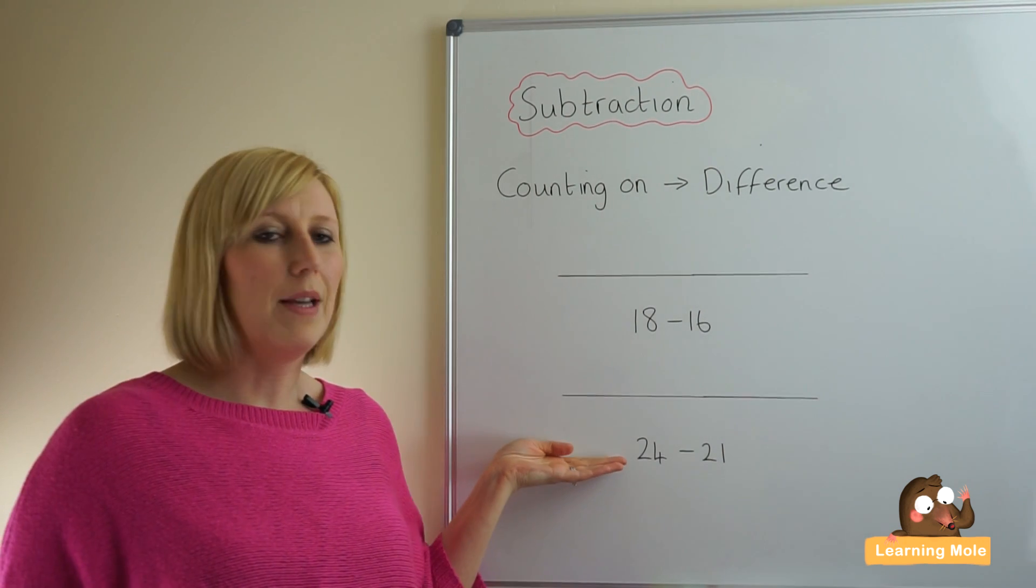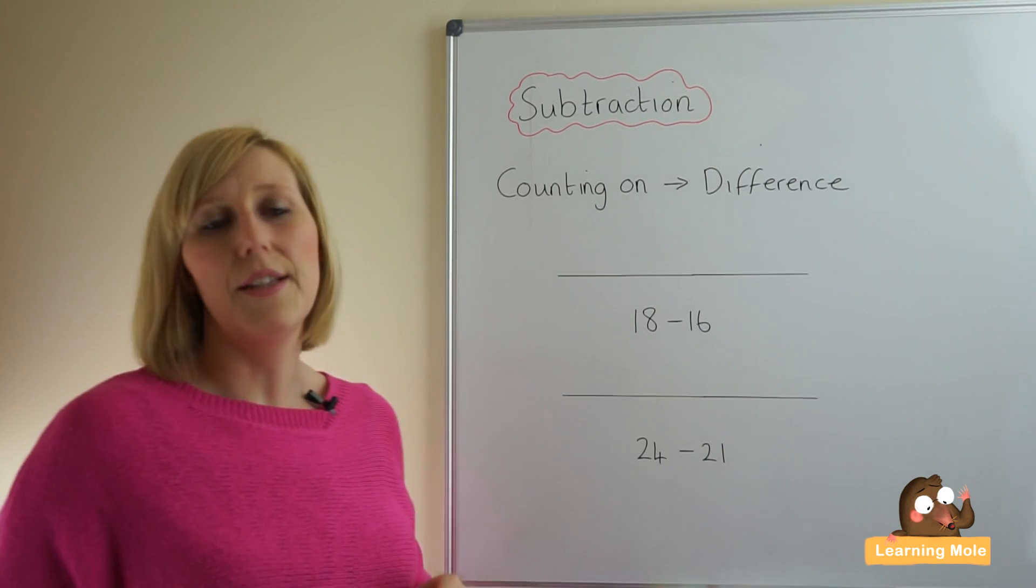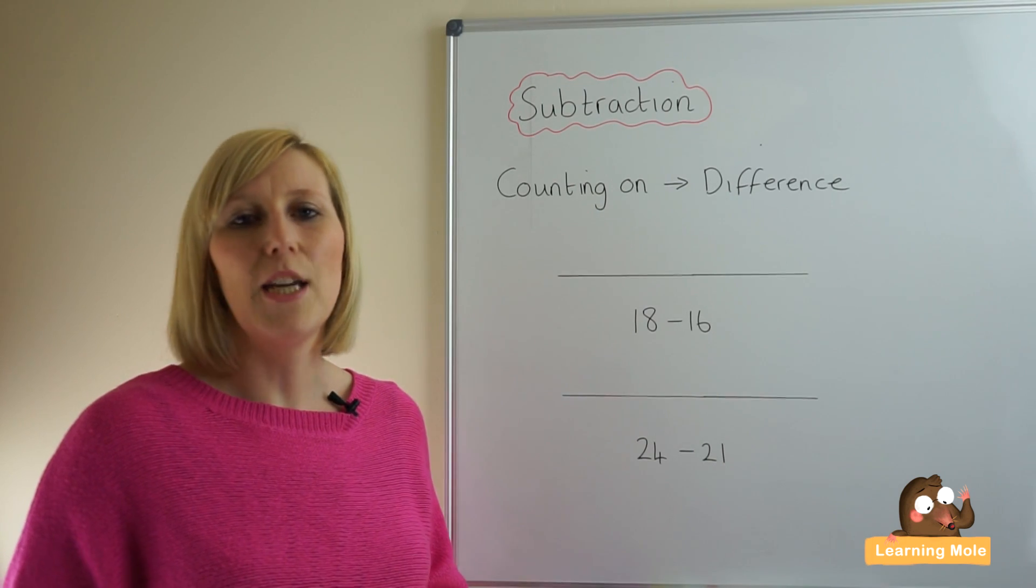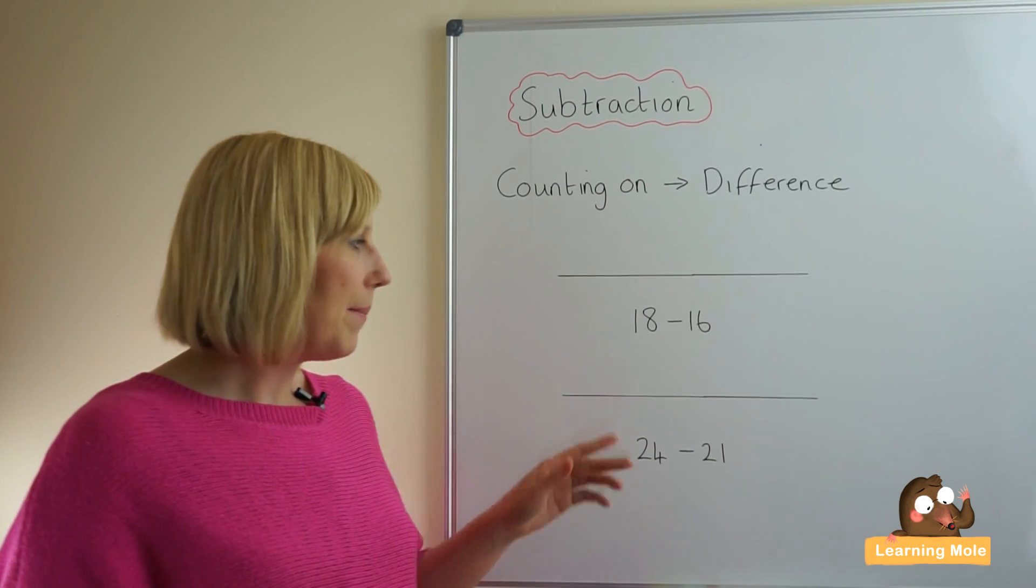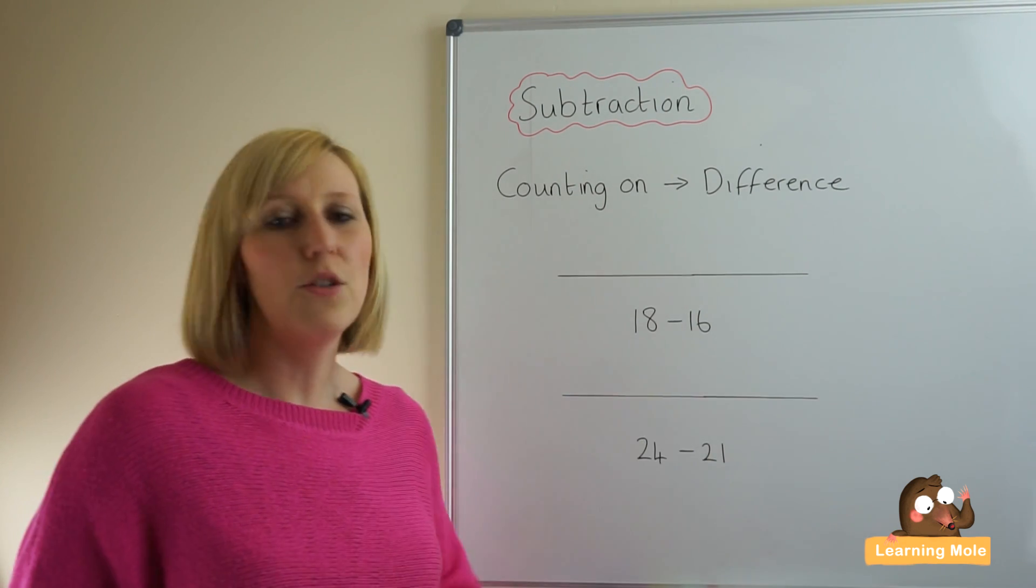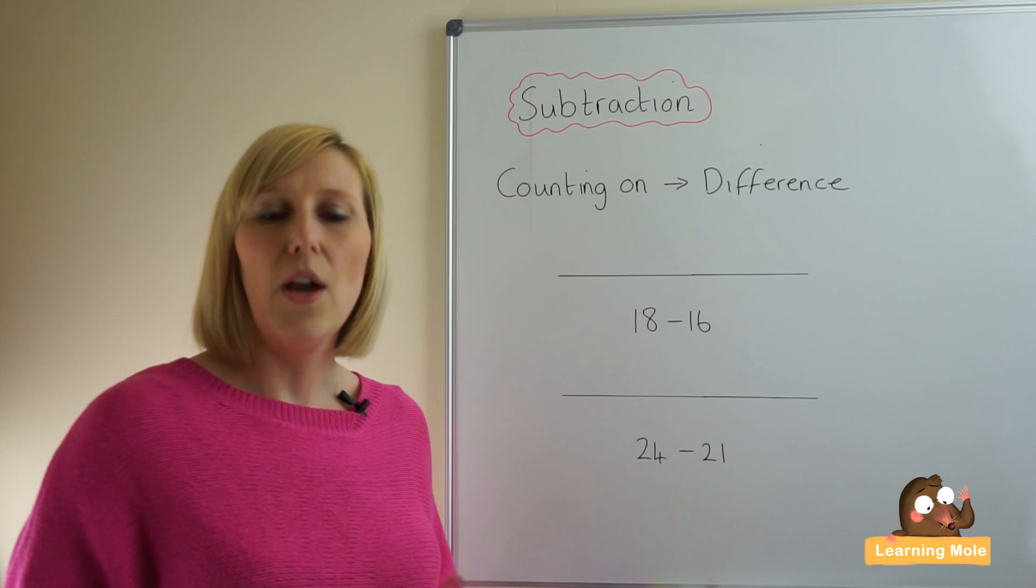Really the best time to use the counting on strategy is when you're taking away two numbers that are actually quite close. What I mean is 18 and 16 are quite close together, 24 and 21 are quite close together, and this is the perfect strategy when the numbers are close together.